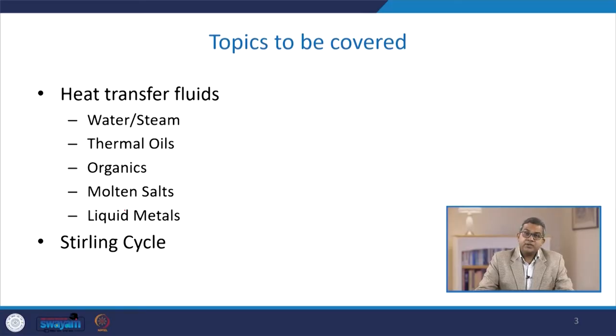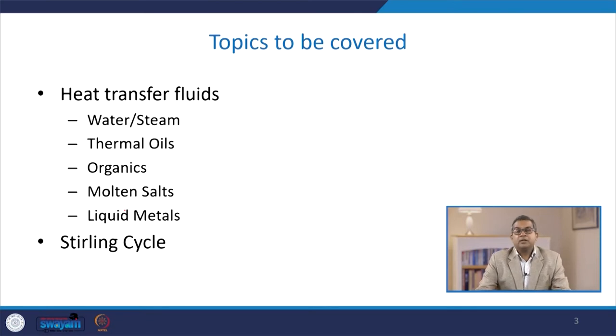In this particular chapter, we will discuss the remaining classification of heat transfer fluids: water or steam, thermal oils, various kinds of organic systems, molten salts, liquid metals, and the Stirling cycle which is used in solar power cycles.